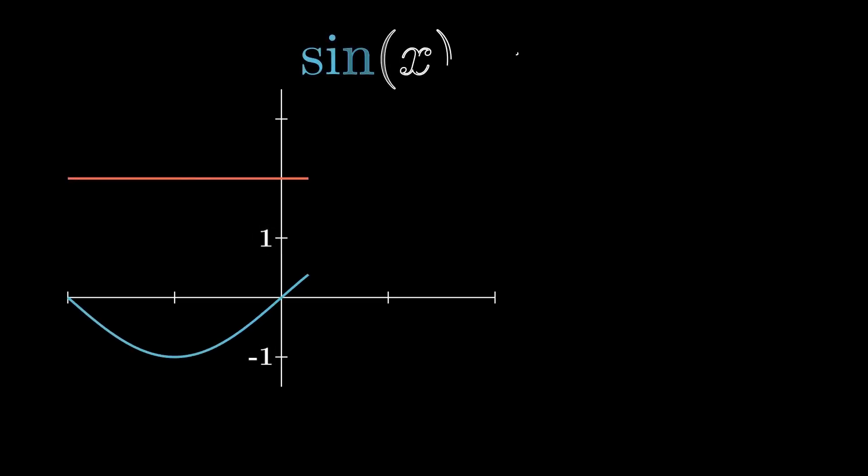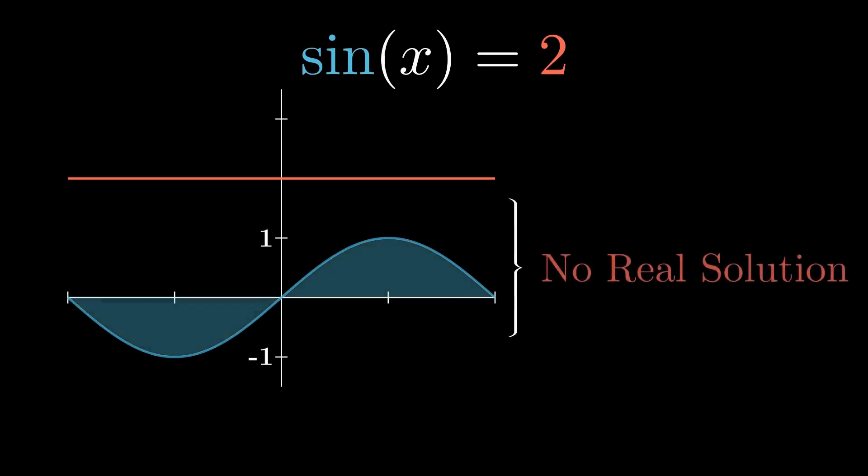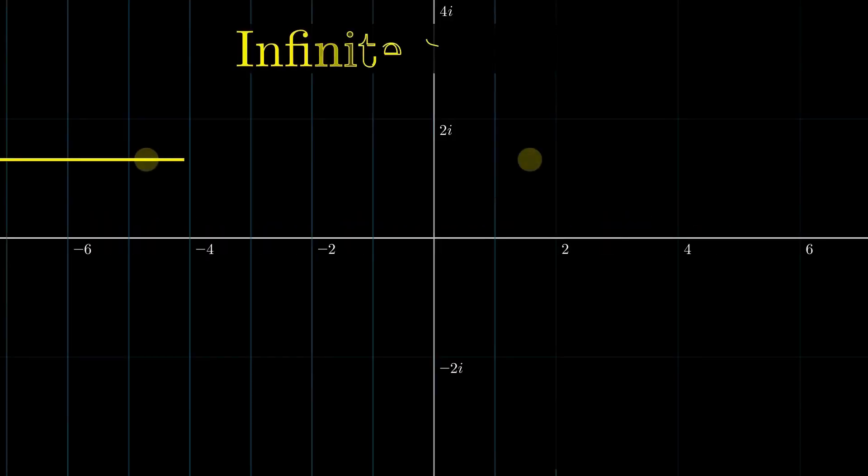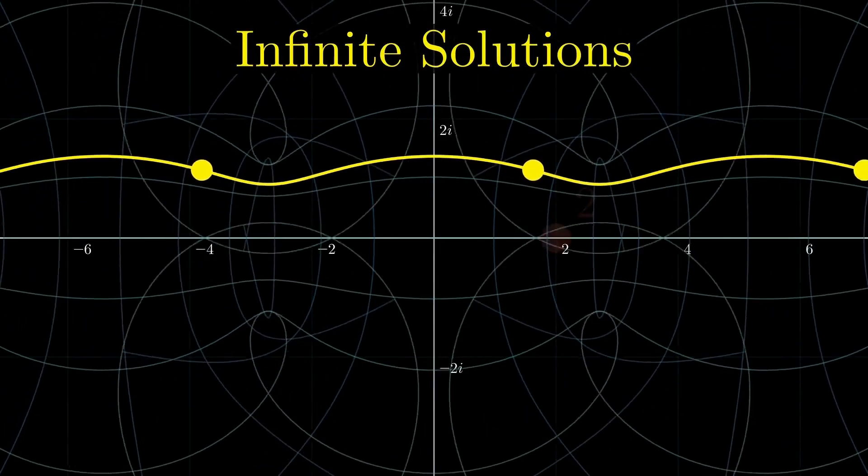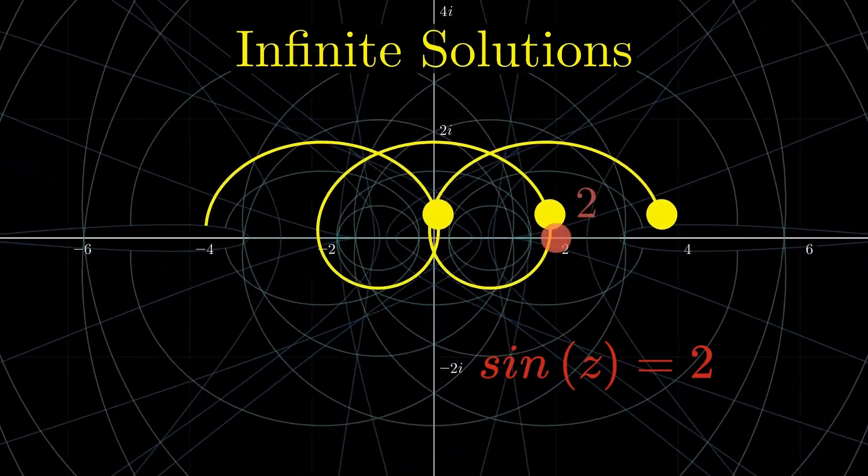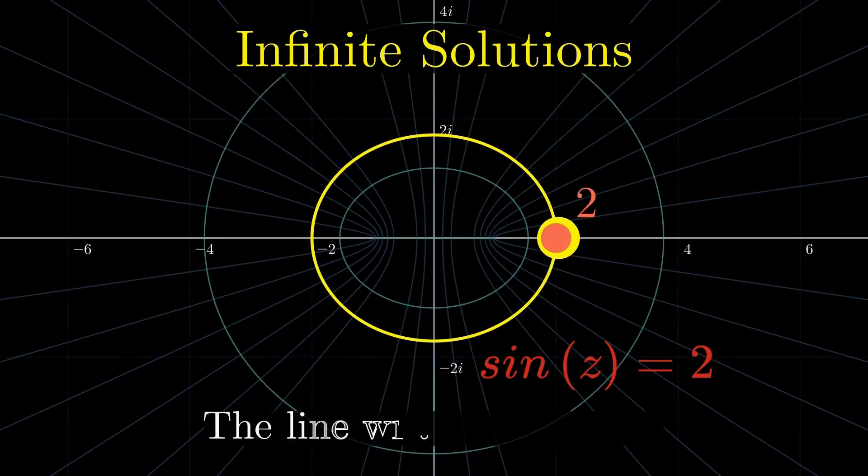Here's a question that looks impossible. Can sine of x ever equal 2? On the real line, it never does. No solution. But in the complex plane, something remarkable happens. A straight line gets bent, wrapped, and mapped into the single value 2. And that's why this impossible equation has infinitely many solutions.